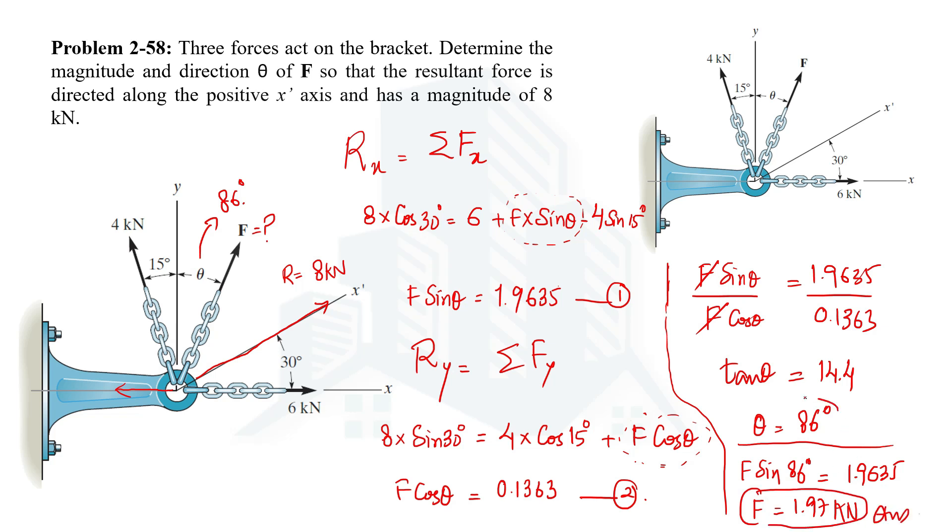So this is one of the answers and this is another answer. Now we have calculated the direction theta and also the magnitude of force which is 1.97. This is how the calculations will be done when we are being given the magnitude and direction of two forces, and the magnitude and direction of the third force is required when the resultant is also given.